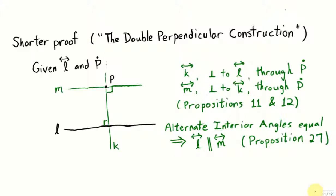It's also possible to give a second proof of this theorem using only results from Euclid's Elements, and we'll do that now. Sometimes this construction is called the double perpendicular construction because we'll construct perpendicular lines twice.